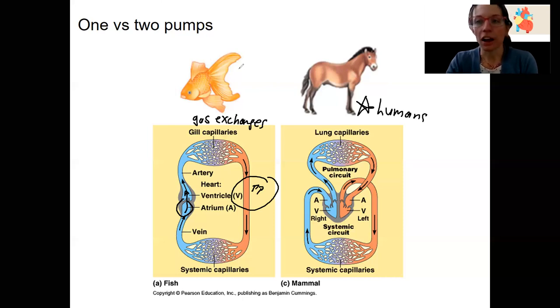One other thing, I just want to define this term also that I want to be able to use is, remember, veins are always entering the heart. Here's a vein entering the heart. Here's a vein. Another term for veins are afferent.